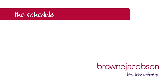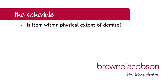Turning now to look at the schedule itself, every item on a schedule of dilapidations is a separate claim, and therefore it is important to address each item individually. When reviewing each item, the tenant should consider the following: Is the item within the physical extent of the tenant's obligations? Does the item actually fall within the definition of premises which are demised to the tenant? Particular care should be taken to establish this where the tenant's demise consists of only part of a building.